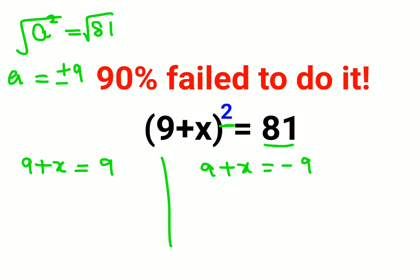Now in this case, in order to find the value of x, you will subtract 9 from both sides. So x becomes equal to 0. And here also we will subtract both sides by 9, so in this case the answer becomes minus 18.